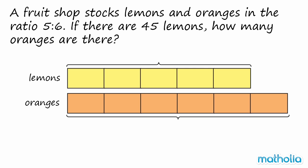Let's use a model to help find the answer. Given the ratio 5 to 6, we can show the number of lemons and oranges by drawing two bar models divided into 5 and 6 units respectively.